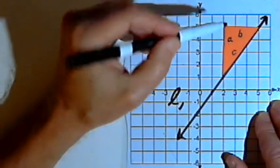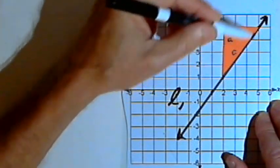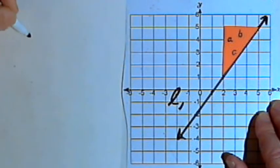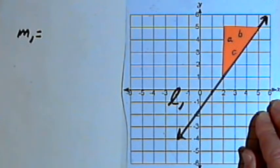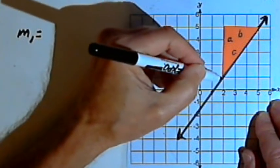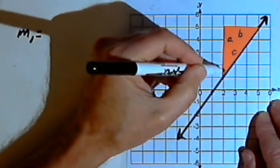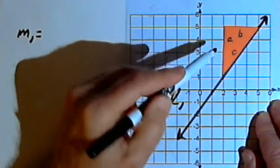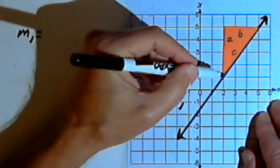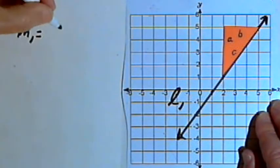So I'm going to use this triangle to find the slope of line L sub 1. Let's call that slope M sub 1. And remember the slope is the rise over the run. So the rise, the distance that the line goes up, is actually the same as the length of side A. That's 1, 2, 3, 4 units.